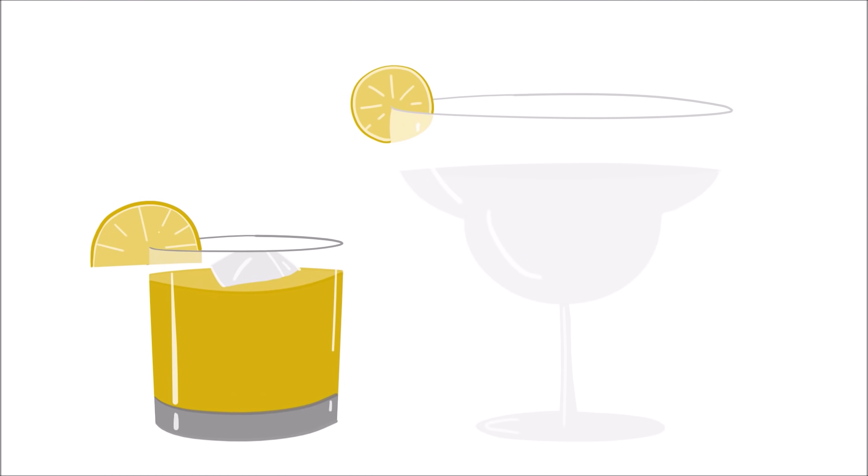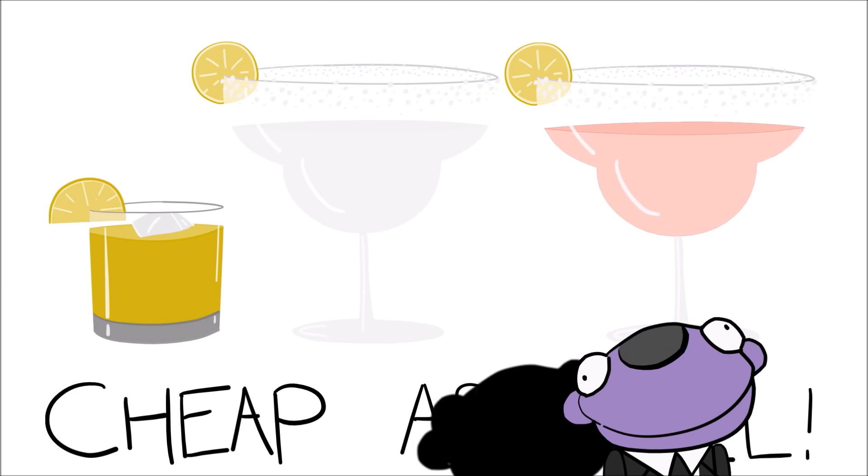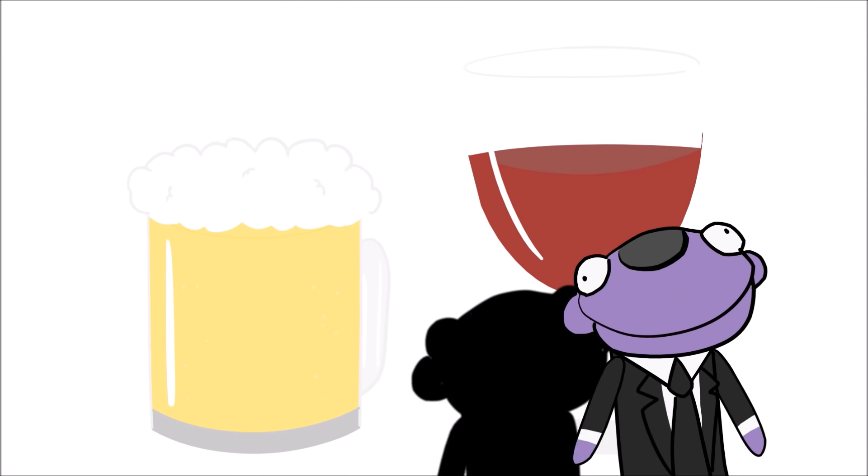Screwdrivers and margaritas, including lime and strawberry ones with salt or sugar rims, are inexpensive and quick to make, Steven said. We have to be fast. There won't be beer or wine at this point. It's down the road.